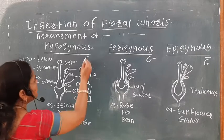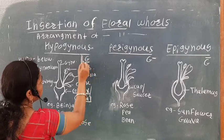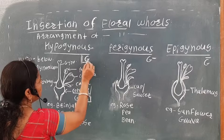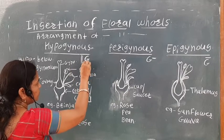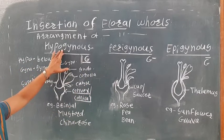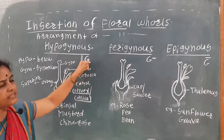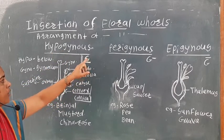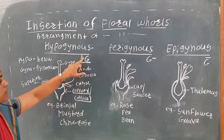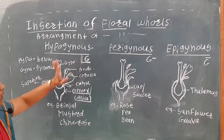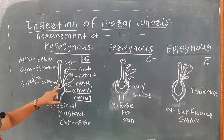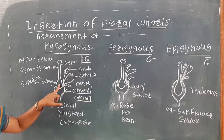There is a specific sign used for the hypogynous flower, where the gynoecium is shown above the thalamus. In this type of flower the ovary is indicated as superior. The sign for the hypogynous flower shows the gynoecium with the dash below it.